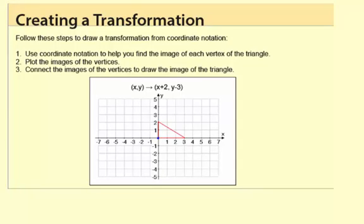Here we have 0, 0. And if we put 0, 0 goes to 0 plus 2, 0 minus 3. We're going to get 0, 0 goes to 2, negative 3. So there's 2 and then negative 3 is right here.